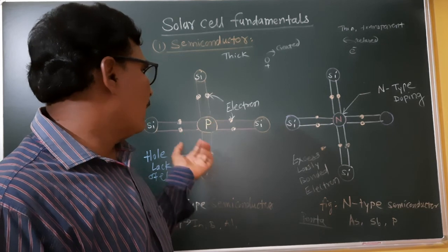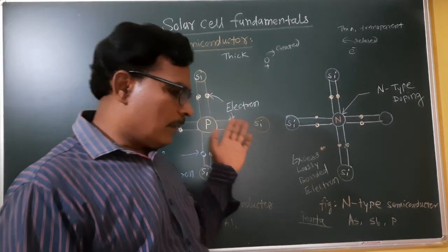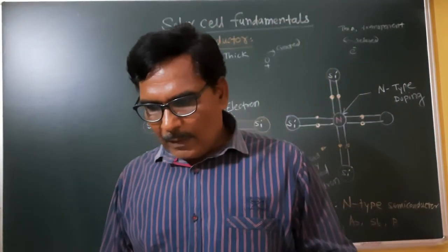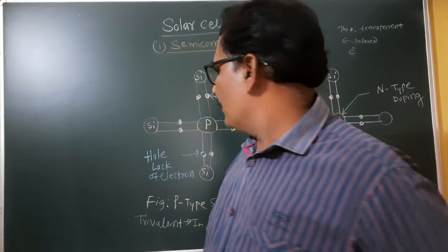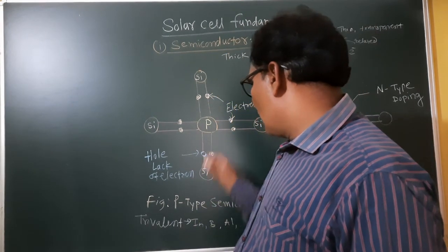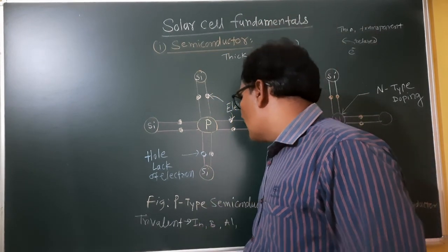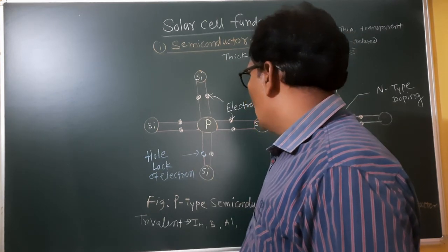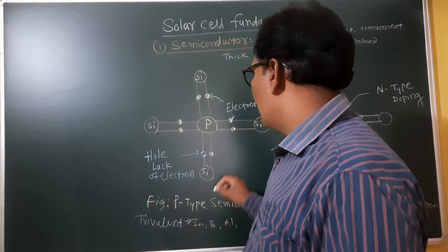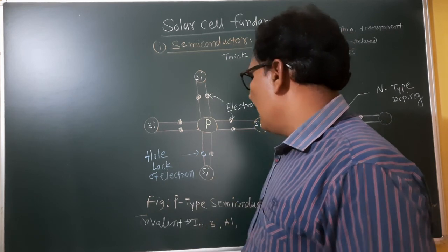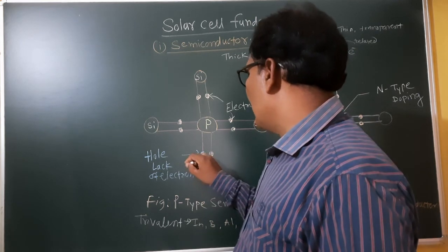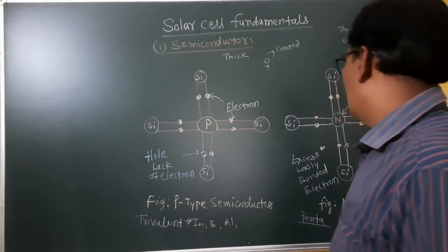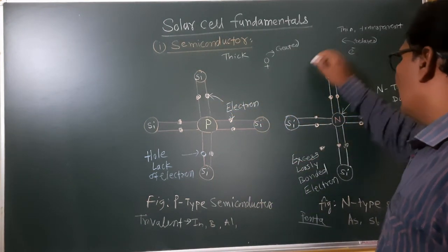Silicon has an atomic number of 14. When third group elements are used, bonding occurs with the neighboring silicon atoms and an electron pair is generated. One of the spaces remains empty — that is called a hole, representing a lack of electrons.